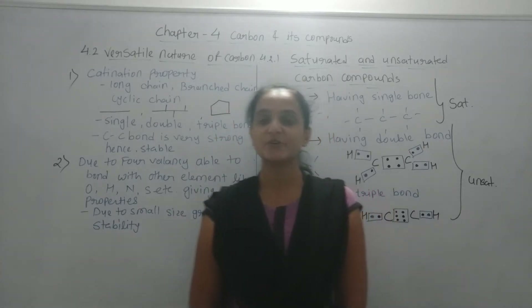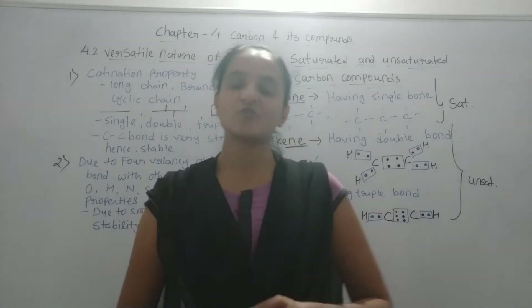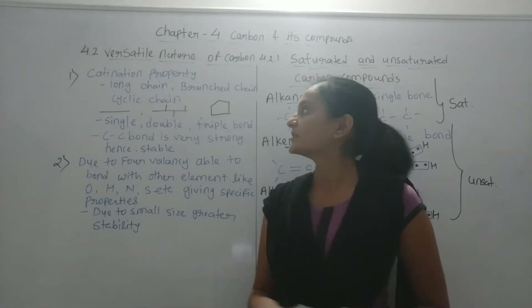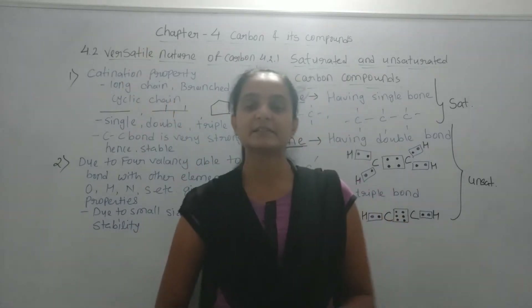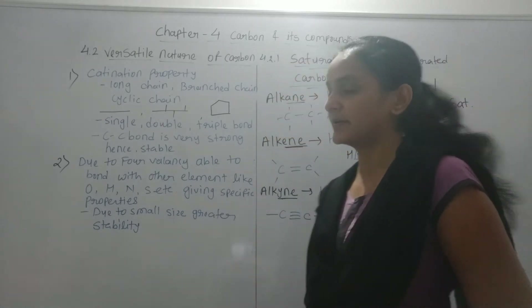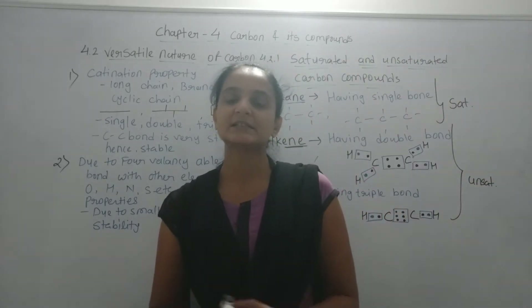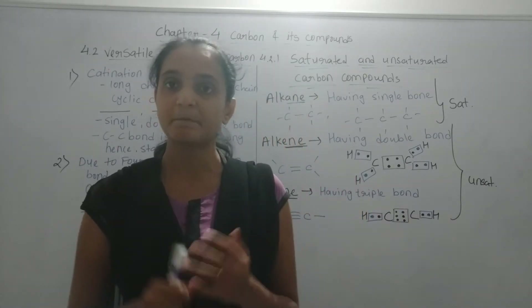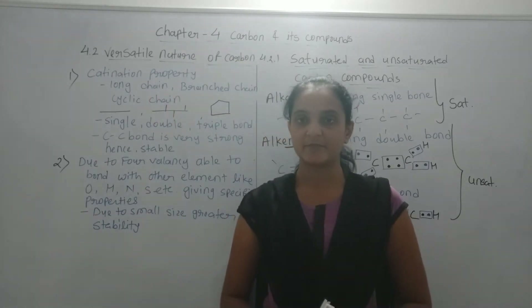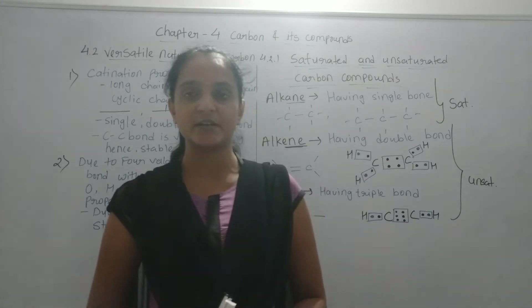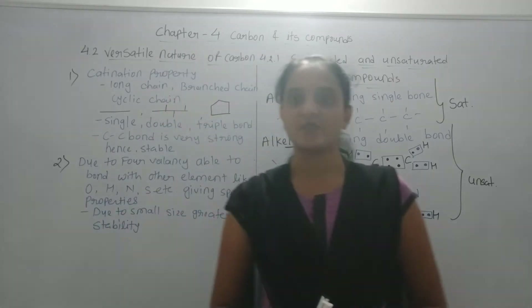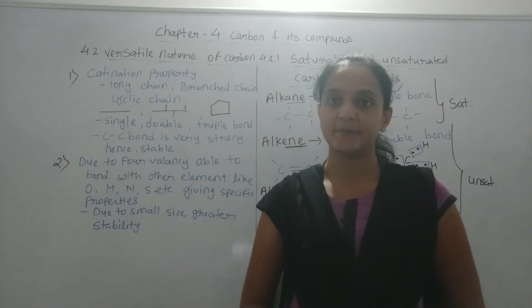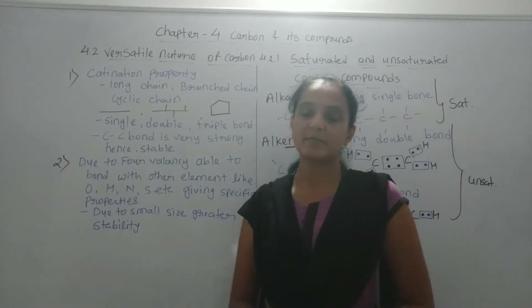Hello viewers, in our previous video we have seen the formation of covalent bond. Now in this video we are going to see topic 4.2, that is the versatile nature of carbon. Carbon possesses this versatile nature because of two unique properties, which we are going to discuss. Let's start with the first property: catenation.